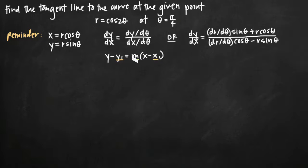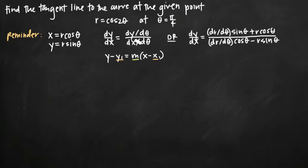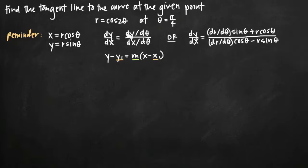The formula we use to find the slope can be one of two formulas: either the formula for dy over dx which takes the derivative of y with respect to theta and x with respect to theta, or a second formula for dy/dx which is all in terms of polar coordinates with r's and thetas. This second formula is actually derived from the first one, and I want to show you how quickly you can get from the first to the second.